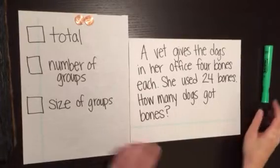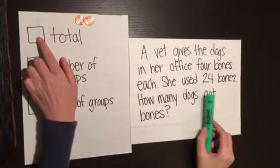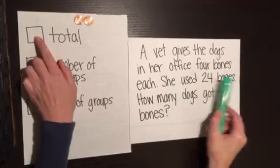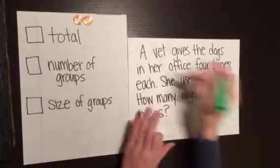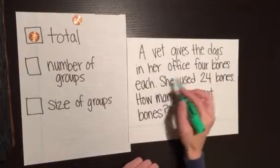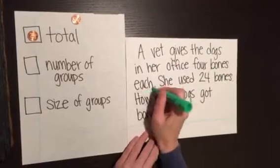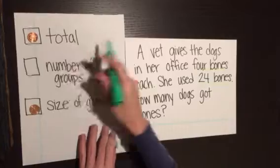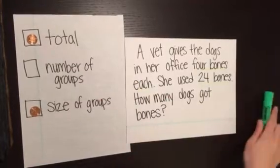Well let's look. First I'm seeing if we know the total. It says that she used 24 bones. Okay, that's the total. And then the other number is a vet gives the dogs in her office four bones each. That's the size of the group. So in this problem I don't know the number of groups.